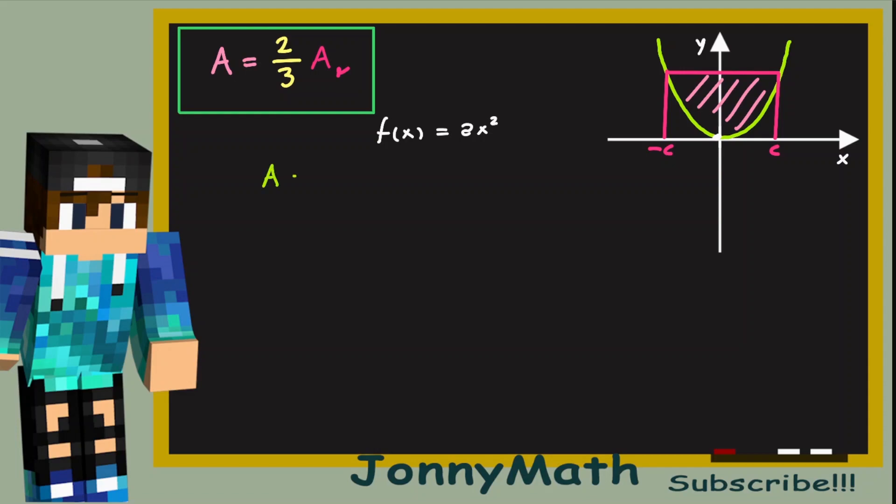Now, the area of our parabola segment can be described by the difference of the total area, that is, the area of the rectangle minus the area underneath the parabola. And we can call it, for example, AP. So we have to find what AR and AP are equal to.